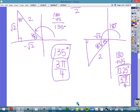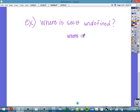And then the next one, where is secant of theta undefined? Which secant is the reciprocal of cosine, so really, this is asking, where is cosine of theta equal to 0? Since secant is 1 over cosine of theta, if we can make cosine of theta equal to 0, that would make secant undefined. So, where is cosine of theta equal to 0?